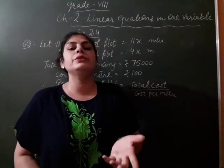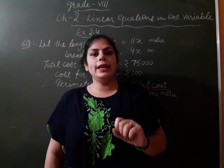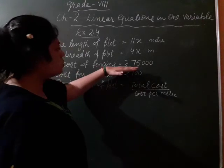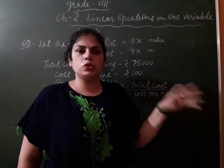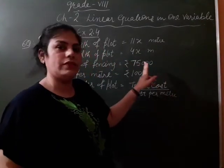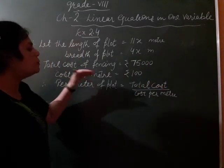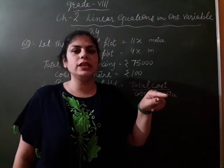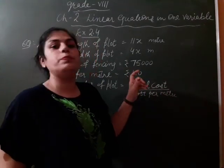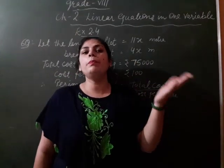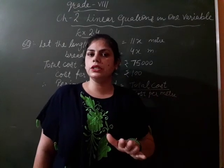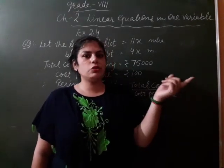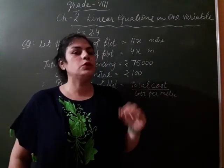Now, rectangle ka perimeter kya hota hai? 2 into length plus breadth. And here, you have given the total cost of fencing. Total hamara kharcha kya hota hai? Rs. 75,000. And cost per meter. If 1 meter per hum fencing karna chahte hai, its cost is Rs. 100. When you have perimeter and cost per meter given, how do you find total cost? Perimeter ko per cost se multiply karte hai, total cost aati hai.